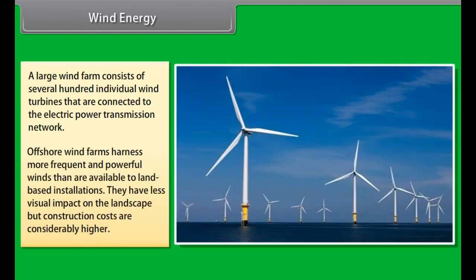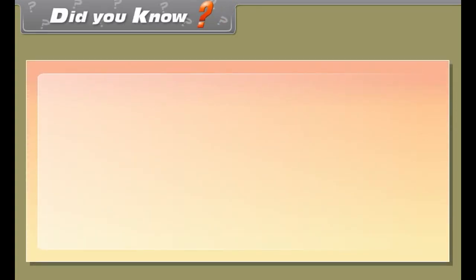For example, forest residues such as dead trees, branches and tree stumps, yard clippings, wood chips, and even municipal solid waste. Biomass also includes plant or animal matter that can be converted into fibers or other industrial chemicals.